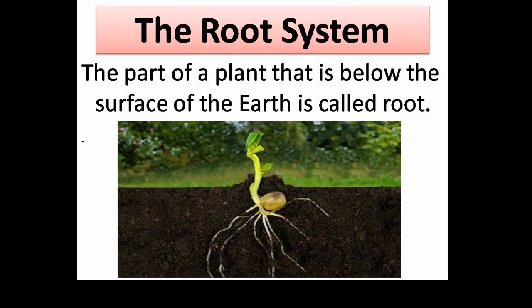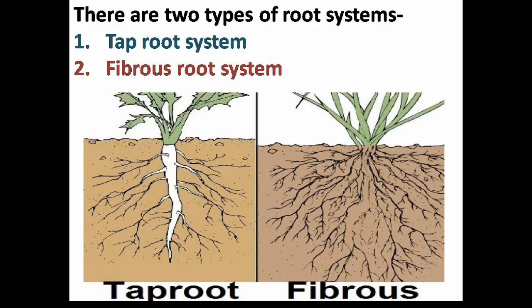The part of a plant that is below the surface of the earth is called the root. There are two types of root systems: first, the tap root system, and second, the fibrous root system.